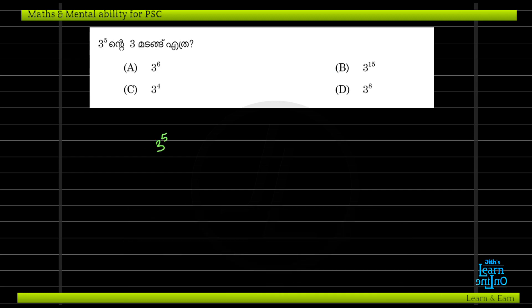We don't know how to do it directly, but we can do 3 raise to 5. What is the rule for powers with the same base? When we multiply A raise to B by A raise to C, we multiply A and add the powers B and C. If we do 2 raise to B, we multiply A and add the powers.